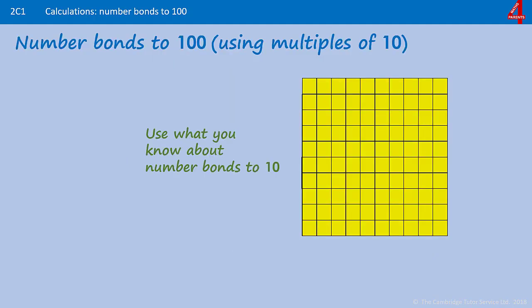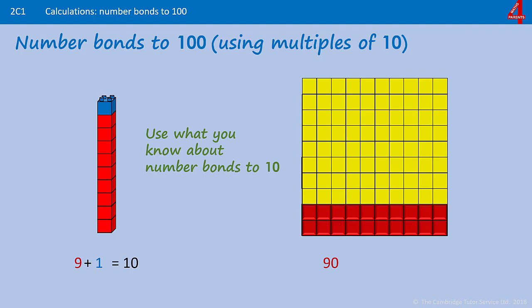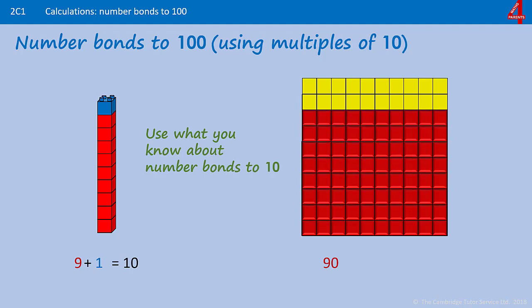For example, you know that 9 add 1 is 10. You can use that information to work out some of your number bonds to 100. So 90, 10, 20, 30, 40, 50, 60, 70, 80, 90, add another 10, is 100.